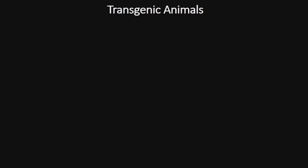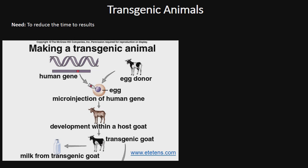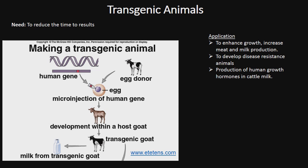Conventional breeding techniques in animals take a long time to yield the desired results, hence recombinant DNA technology has been introduced. Transgenic animals are one such approach, where the gene of interest is injected into the host egg to produce offspring with the desired gene expression. Applications include enhanced growth, increased meat and milk production, development of disease resistant animals, and production of human growth hormones in cattle milk.